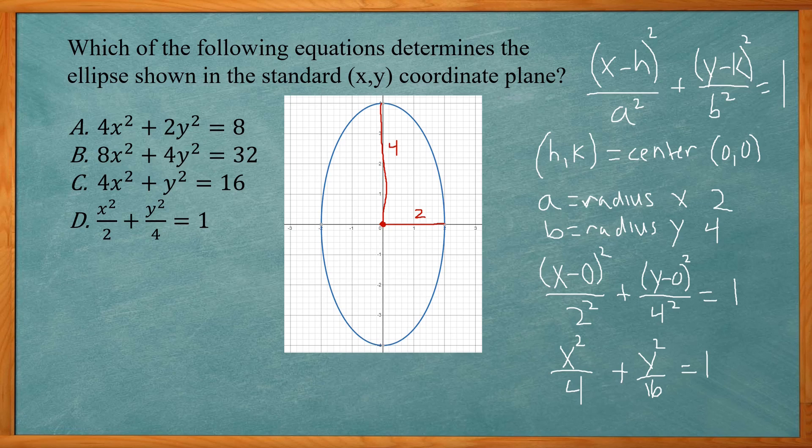Multiply by the common denominator. In this case, 4 and 16, the common multiple is 16. So I'm going to multiply everything by 16. That's going to give me 16 divided by 4 is 4, so 4x². 16 divided by 16 is 1, so plus y². And then 1 times 16 is 16.